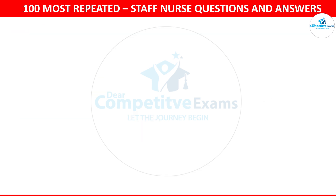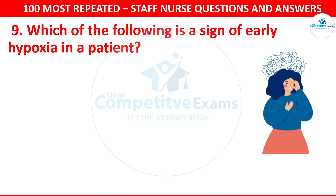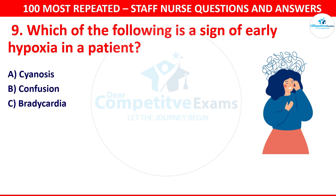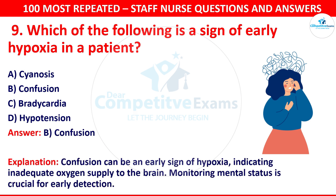Question 10. Which of the following is a sign of early hypoxia in patients? The options are cyanosis, confusion, bradycardia or hypotension. The correct answer is confusion. Confusion can be an early sign of hypoxia, indicating inadequate oxygen supply to the brain. Monitoring mental status is crucial for early detection.